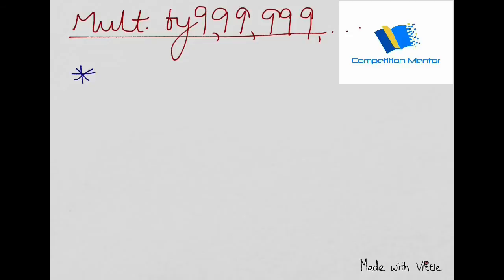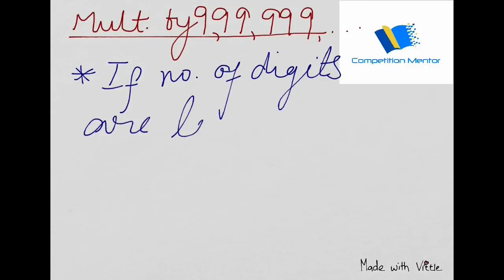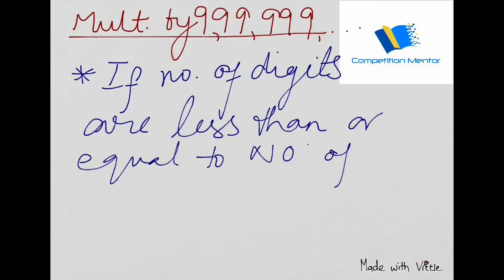Multiplication by 999 or 9999 or something like that, we have a method for this. You can multiply easily without even needing to do any calculation on rough sheet with the old method. First we'll write down the logic. So if number of digits are less than or equal to number of 9's, the below logic you will apply.